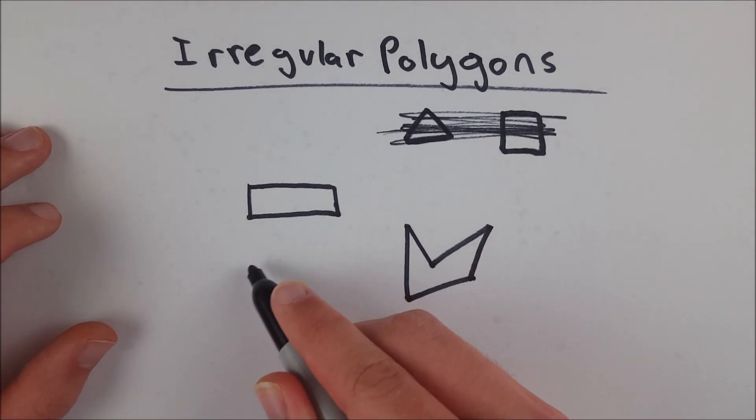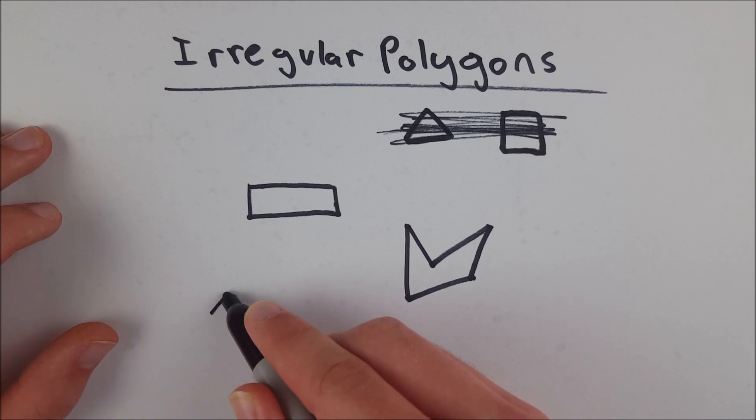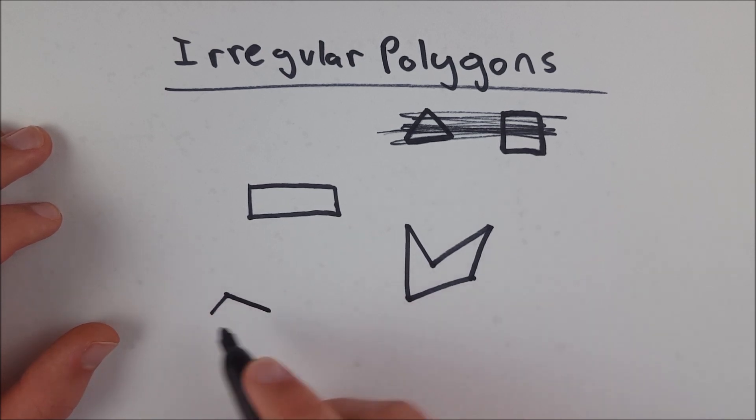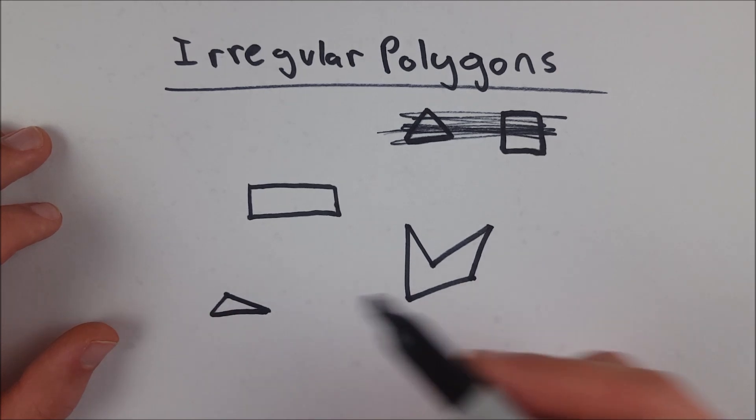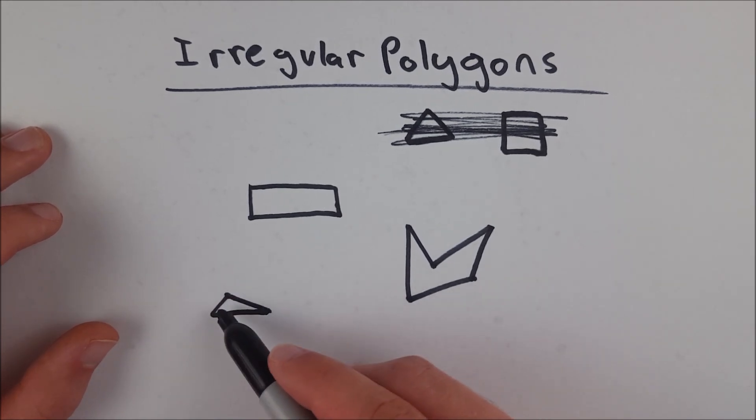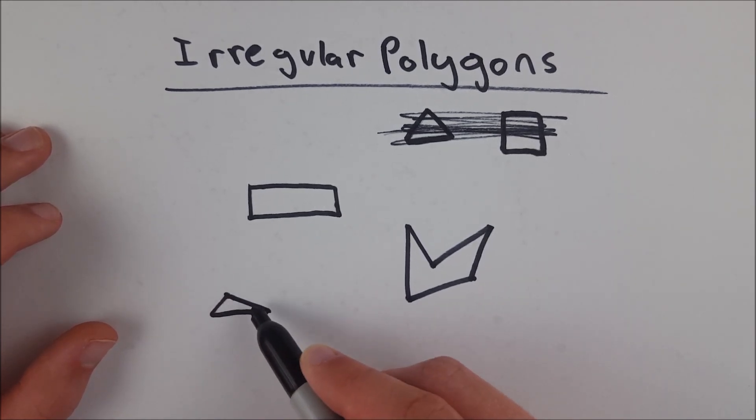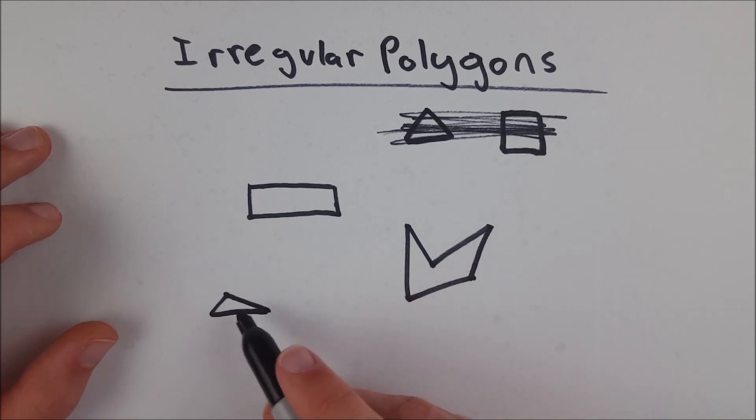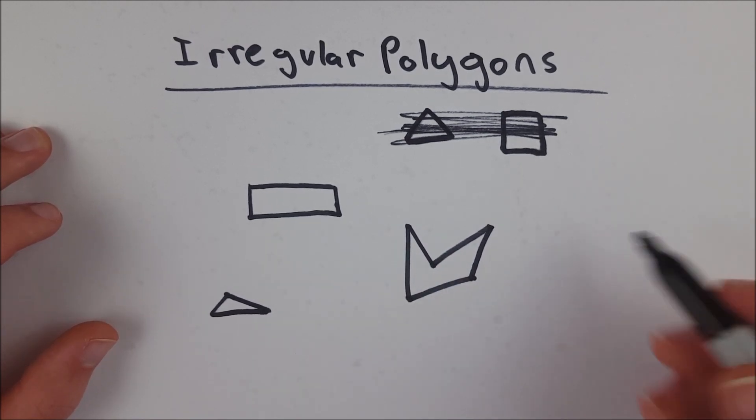An irregular triangle might be something like a scalene triangle, which is a triangle where none of the sides have congruent measures. So this triangle is a scalene triangle if this side is not equal to this side, which is not equal to this side. So this is also an irregular polygon.